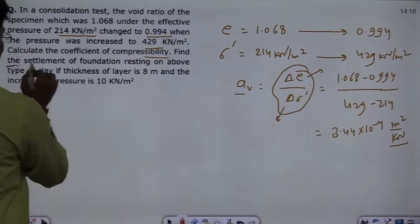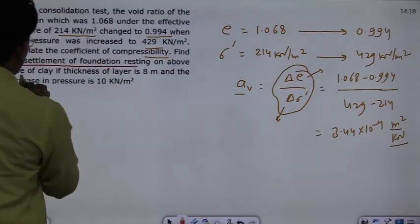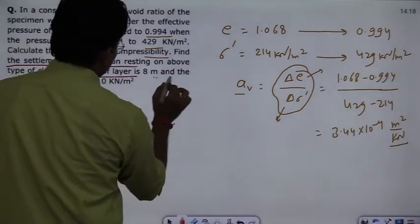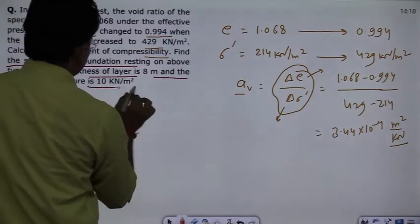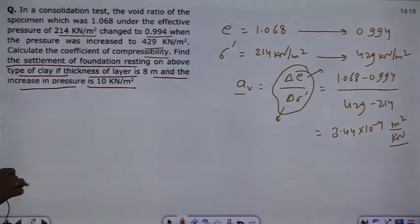Find the settlement of the foundation resting on above type of clay if the thickness of the layer is 8 meters and the increase in the pressure is 10 kilonewton per meter square. What will be wrong?